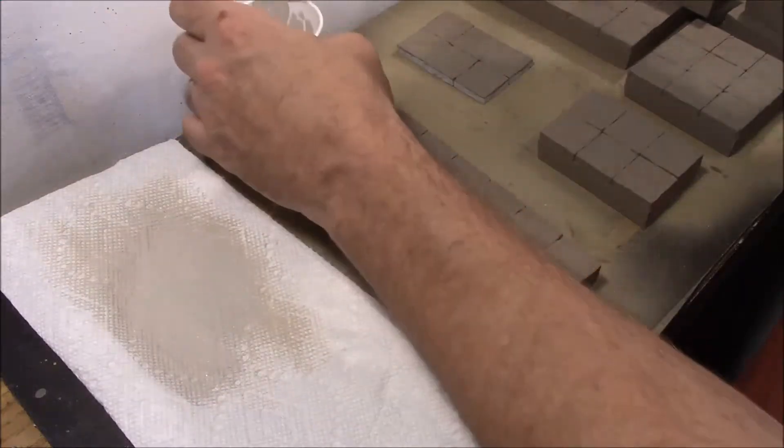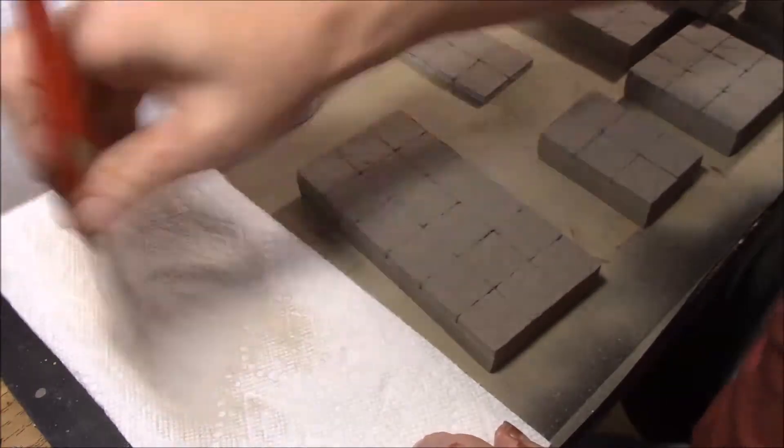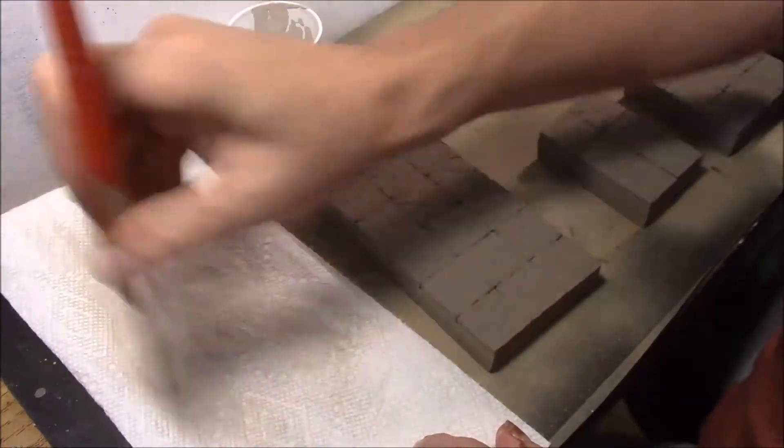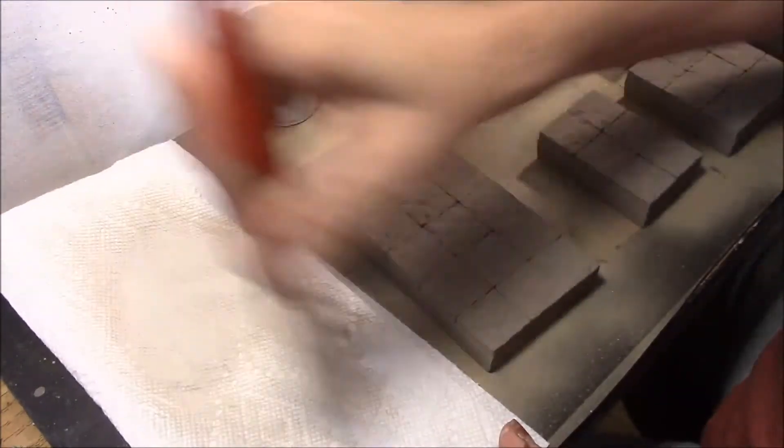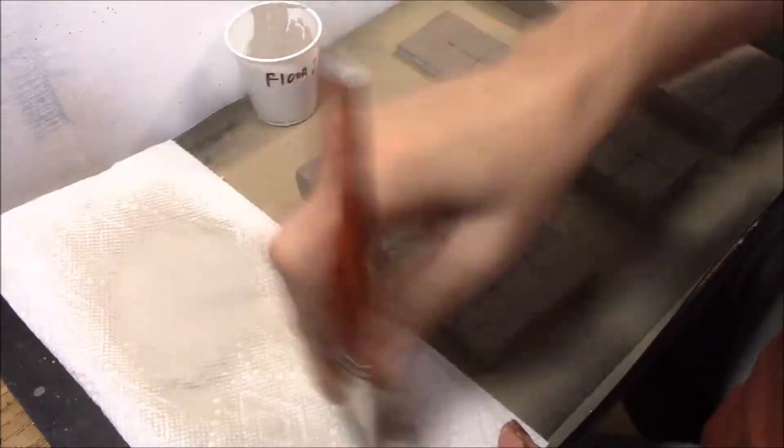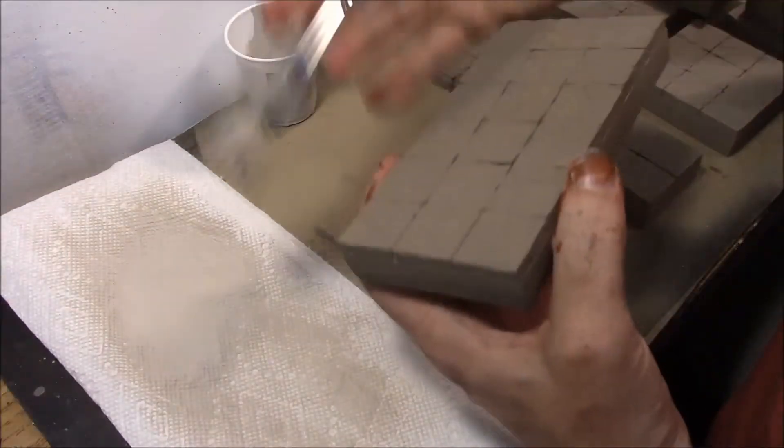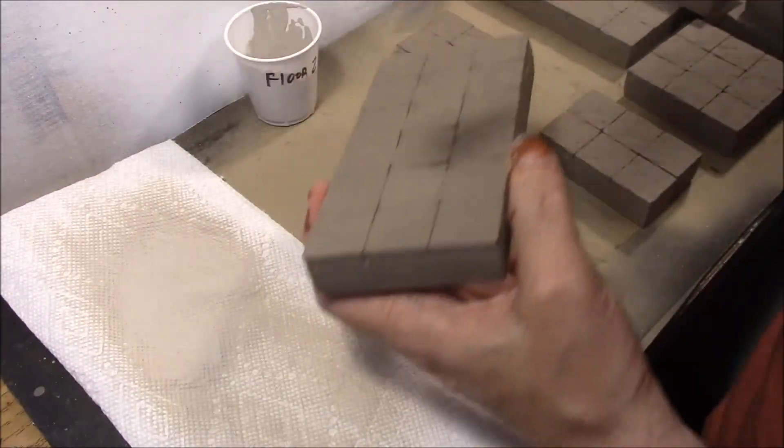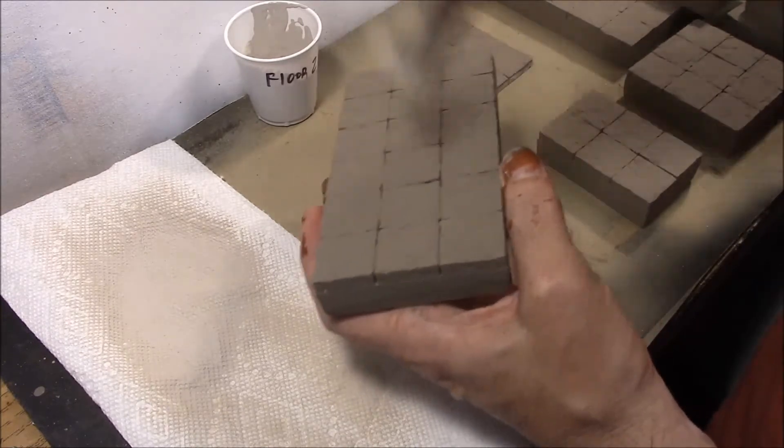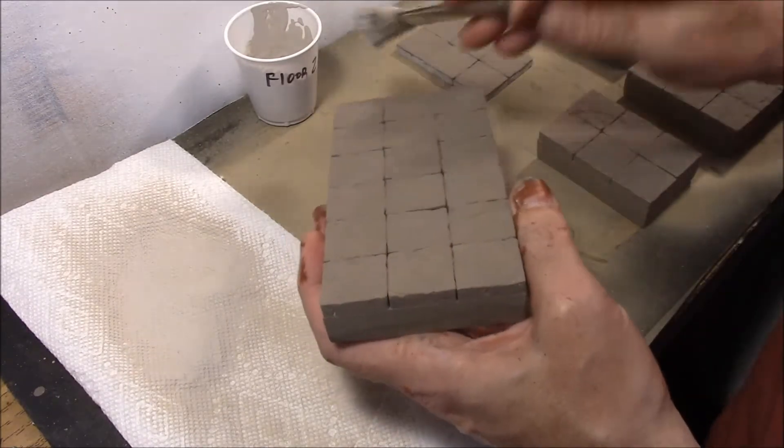So I'm taking our lighter color here, and what you want to do is get some in the brush, and then you want to keep hitting that brush. You want this to be where there's almost nothing in the brush. It's really handy to do the floor separately like this, because if we had walls sticking up, it would be very difficult to do a nice dry brushing on the floor.